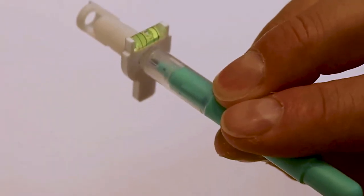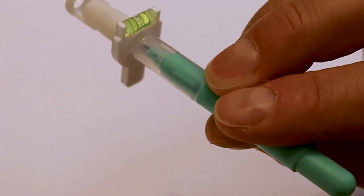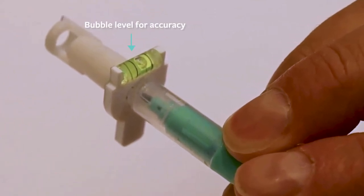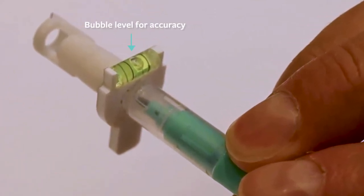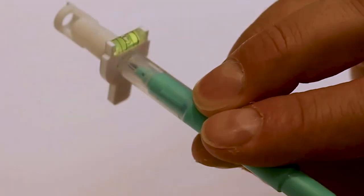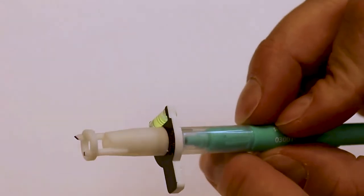As you approach the patient use the bubble level to ensure that your axis markings will be accurate. You hold the device a few millimeters from the patient's cornea centered on the cornea and then you gently move the device forward. Apply your marks to the cornea and then the device can be disposed.